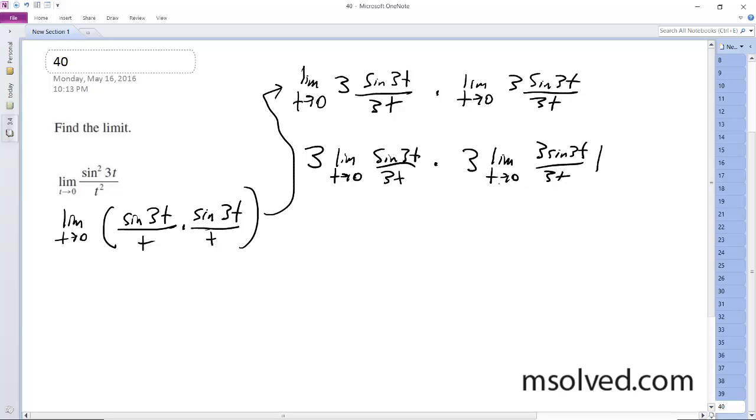And this goes to 1, this goes to 1 also, and you get 3 times 3 which is equal to 9, and that's it.